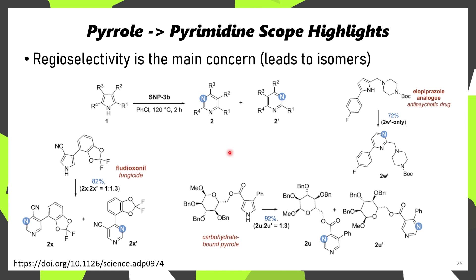Once they've made that naphthalene adduct, it's possible to do ring expansion of pyrroles, as mentioned before. However, because ring expansion can happen at either bond position, you'll get two different types of pyrimidine products. In the case of fludioxonil, a 1-to-1.3 ratio of each pyrimidine was observed.